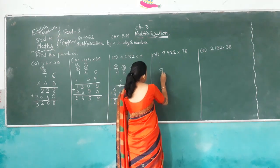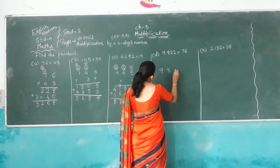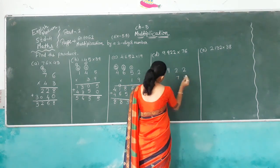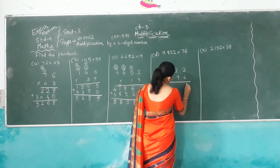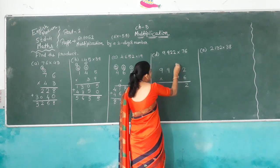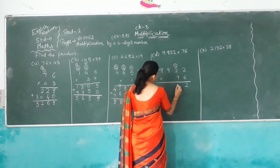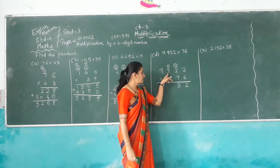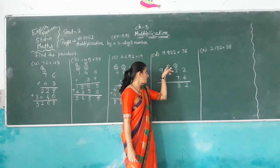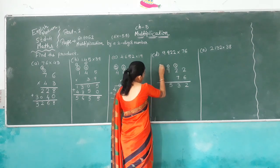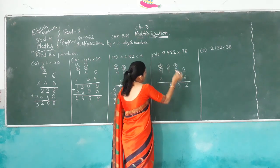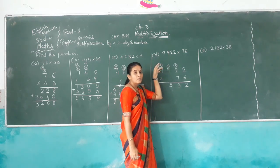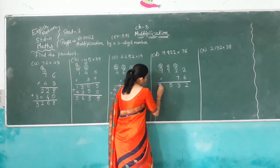Another one: 9,922 multiplied by 76. 6 times 2 is 12, carry over 1. 6 times 2 is 12 plus 1 is 13 — wait, 6 times 2 is 12 plus 1 is 14, carry over 1. 6 times 9 is 54, 54 plus 1 is 55, carry over 5. 6 times 9 is 54, 54 plus 5 is 59.